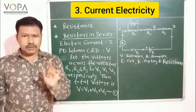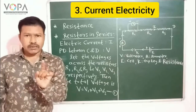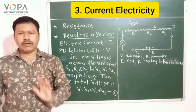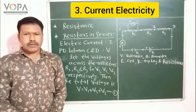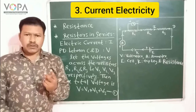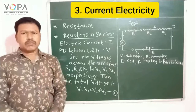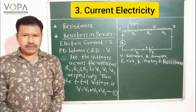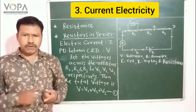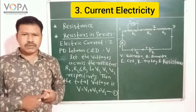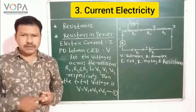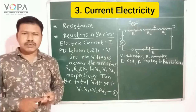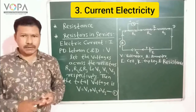The formula is R is equal to V upon I. There are two methods of connecting resistors in an electric circuit. First, resistors connected in series, and second, resistors connected in parallel.